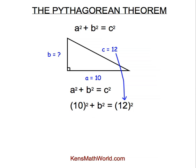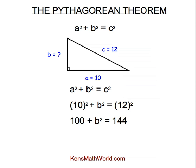10 squared is 100, and 12 squared is 144. So now we have 100 plus B squared equals 144. And we need to subtract 100 from both sides. So this is where it differs from the previous problem. We didn't have to do a step like this on the other problem because the known values were on the first side, and we were able to combine them after we had squared them.